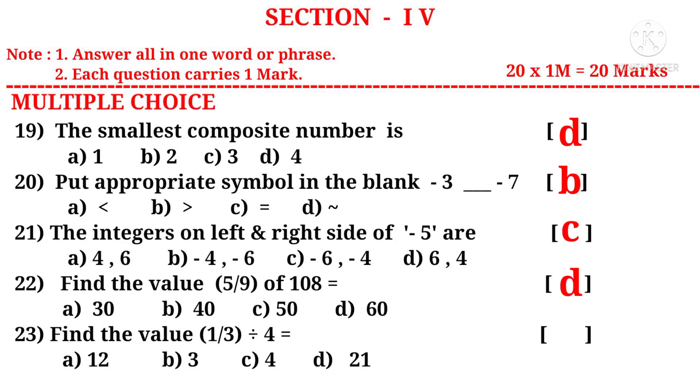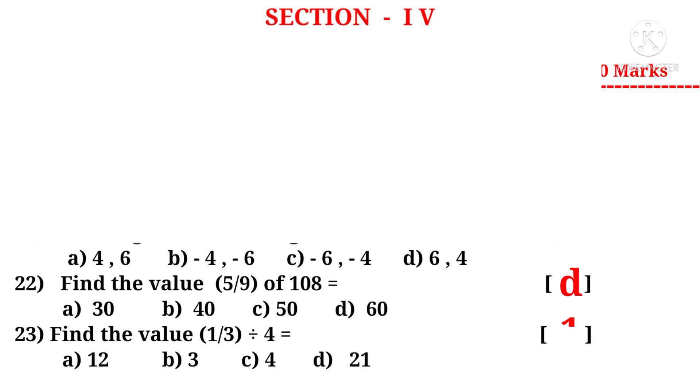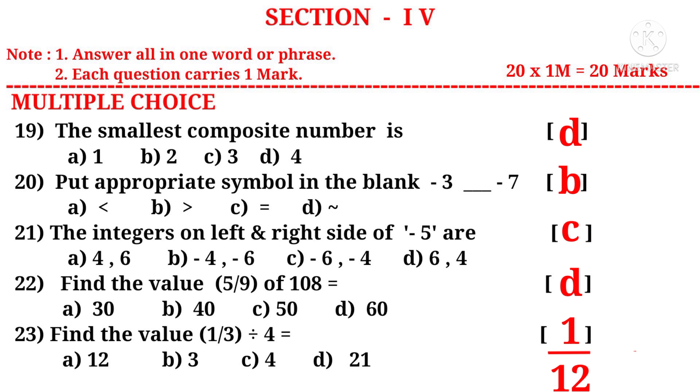Find the value of 1 by 3 divided by 4. So it can be written as 1 by 3 divided by 4 by 1. So it can be written as 1 by 3 into reciprocal of 4 by 1 is 1 by 4. So in the numerator, 1 into 1 is 1. In the denominator, 3 into 4 is 12. That is 1 by 12. So there is no answer in the choice. So correct answer is 1 by 12.